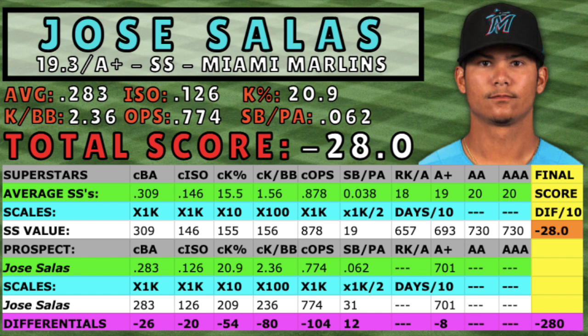Salas is most likely to grow out of shortstop in the future, and he's already spent the majority of his games in high A at second base. He's got fringe power at the moment, but it's hard to say how much more he'll develop down the road. When compared to today's superstars, like most prospects on this list, he took dings in every offensive category aside from stolen bases per plate appearance. Salas' biggest deficits came in K numbers and OPS, while his losses were marginal in the batting average and ISO column. It's hard to believe these players are getting docked points for near 20% K rates — it just goes to show how elite these superstars were in the minor leagues. Salas finished with a negative 0.28 in this episode, but has a lot of promise as he's still just 19.3 years old.